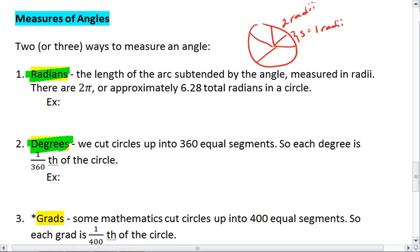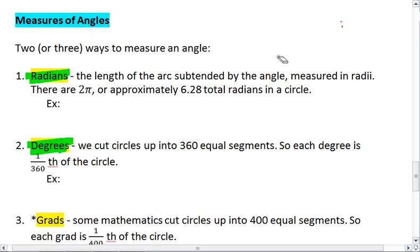Three radians, four, five, six, and I can fit a total of 2π, or approximately 6.28 total radians in a circle.